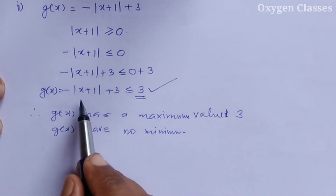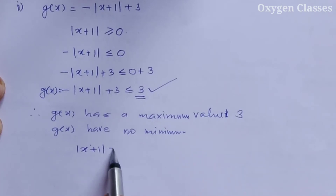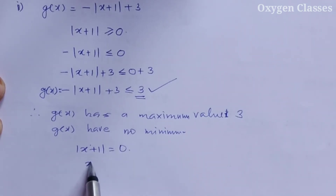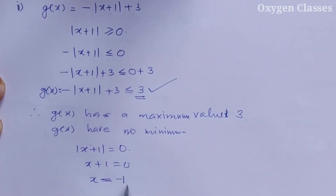The maximum value occurs when mod x plus 1 equals 0, that is when x equals minus 1. So the maximum value is 3 at x equals minus 1.